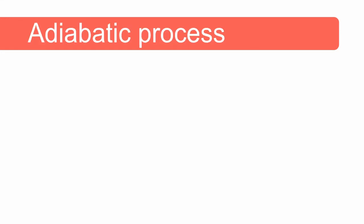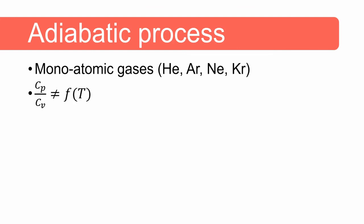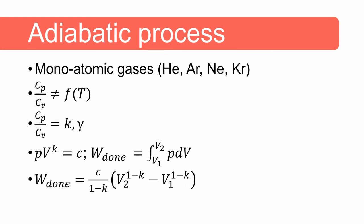Lastly we can have a look at the adiabatic process. For monoatomic gases such as helium, argon, neon and krypton it is safe to assume that the ratio of the constant pressure specific heat cp to the constant volume specific heat cv does not vary with temperature. Such gases are often called perfect gases and the ratio between cp and cv is called k or gamma. For a specific adiabatic process, in other words a process that does not exchange heat with the environment, pv to the power of k remains constant and we can denote that constant value as c. We can then use this equation to get rid of the pressure variable in the work equation and the result is this equation at the bottom.